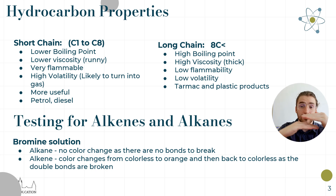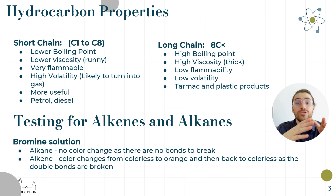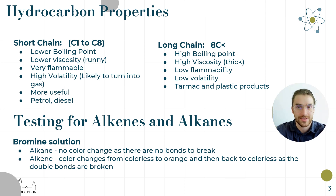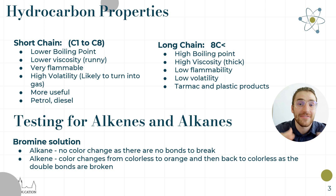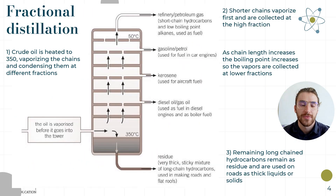If it's an alkene with a double bond, that bromine will break the double bond and the bromine molecules connect to the carbons that used to have the double bond. Once those bromine molecules are taken into the hydrocarbon, the solution goes from orangey-brown to clear — that's how we know it's an alkene. If it's an alkane, it's saturated, meaning it has the full amount of hydrogens, all bonds are taken up, and the bromine stays orange. Alkenes are unsaturated — the double bond can be broken and joined with bromine, making it colorless.